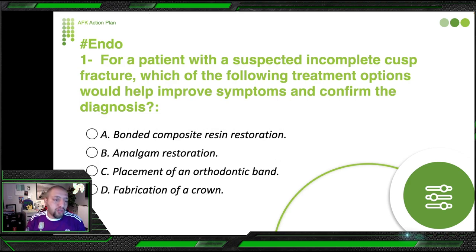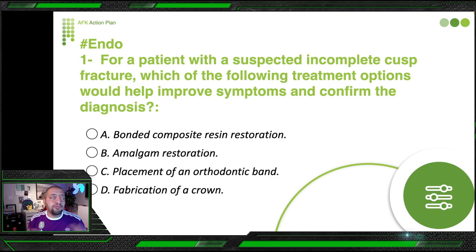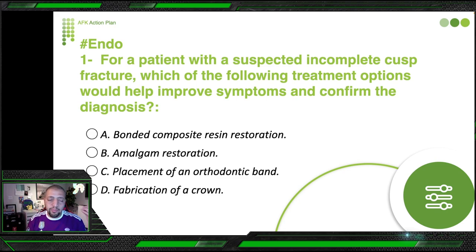The answer choices are: bonded composite, transillumination, amalgam restoration, placement of orthodontic band, or fabrication of a crown. I will give you an algorithm on how to think about cusp fracture — how to diagnose it, how to treat it. Please pay attention because this concept is not very common, but when you see a question about it, it will be really complicated.